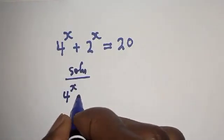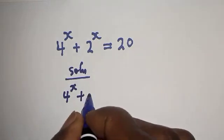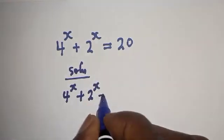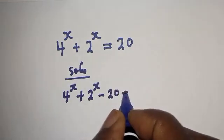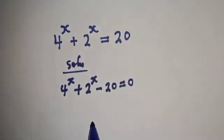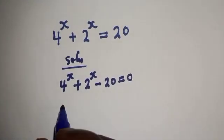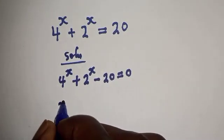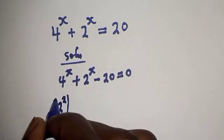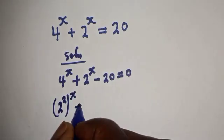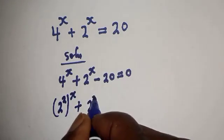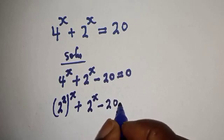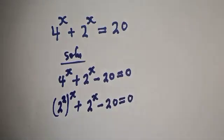4 raised to power x plus 2 raised to power x. Let's bring this 20 to this side, minus 20 is equal to 0. Now, 4 raised to power x can be written as 2 squared raised to power x, plus 2 raised to power x minus 20 is equal to 0.